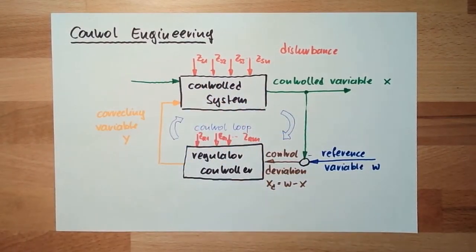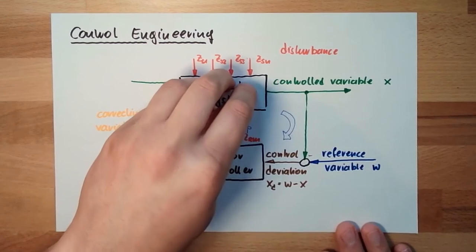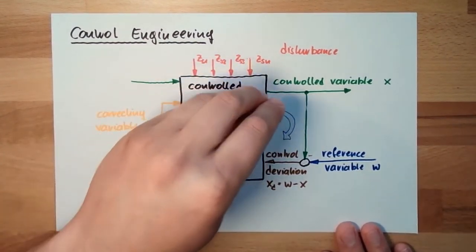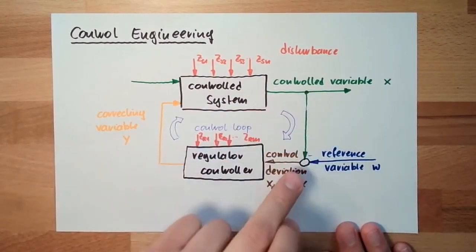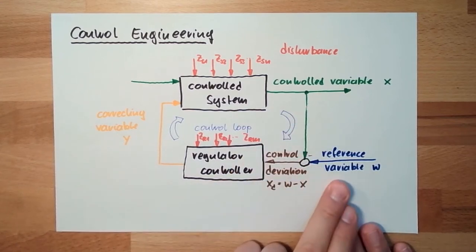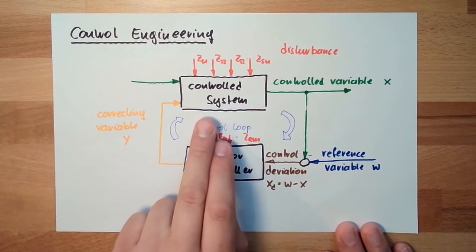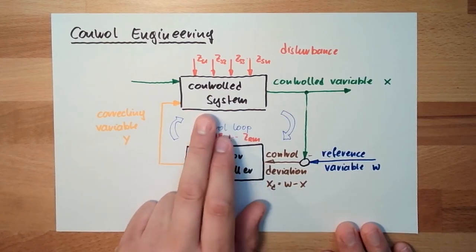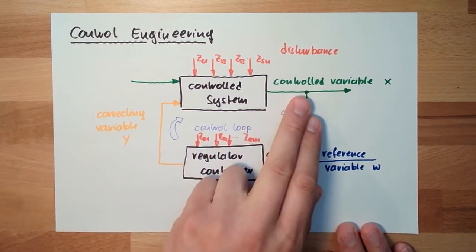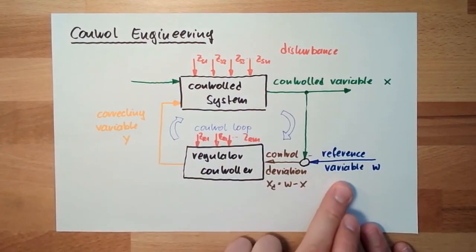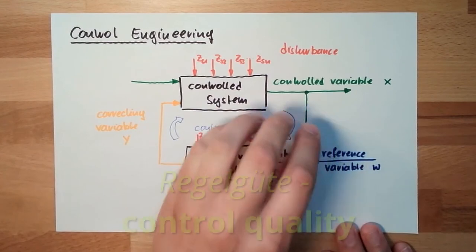Because the task of control engineering is clear. There is a continuous process, it needs to influence the process in a way that the control variable is almost equal to the reference variable, or as equal as possible to the reference variable. It needs to guide the control system somehow in a way that the control variable is not deviating too much from the reference variable. This means the control quality must be given.